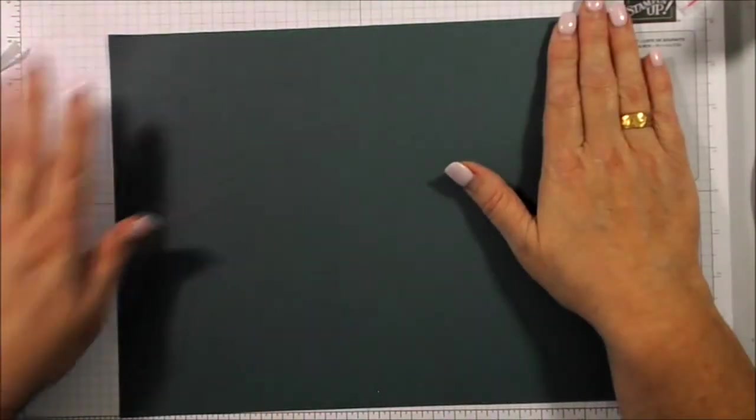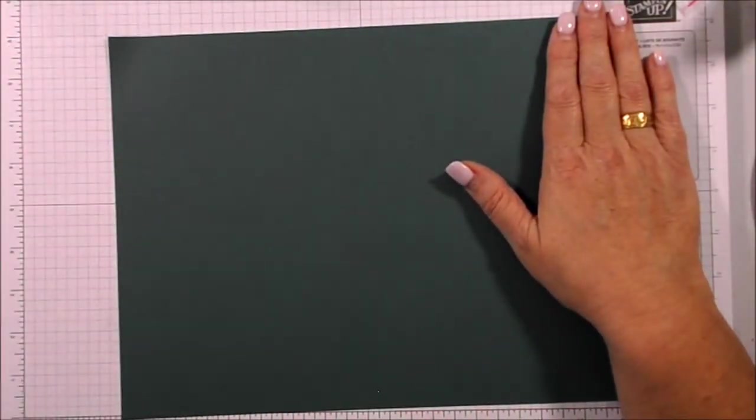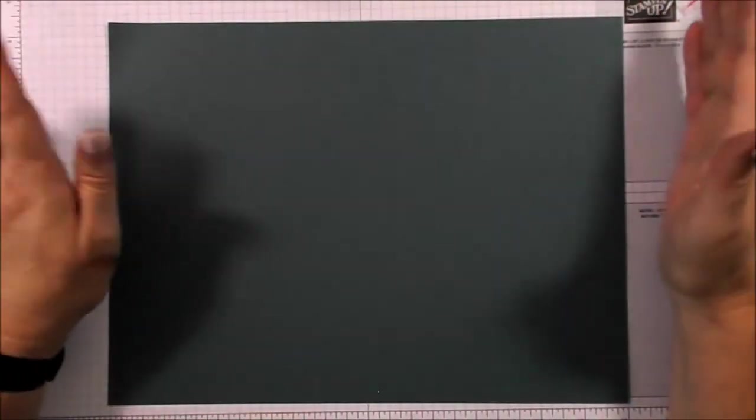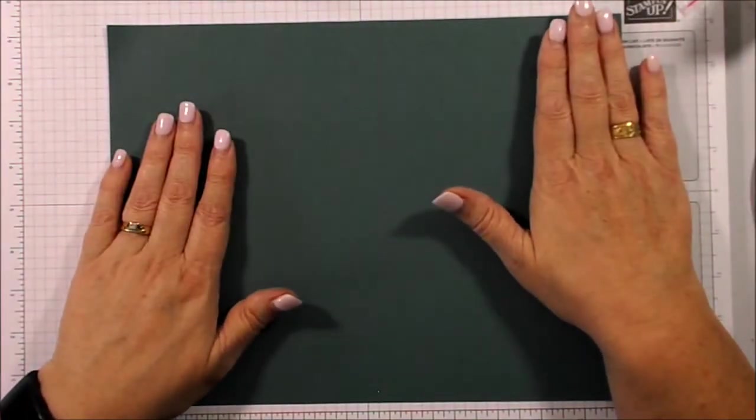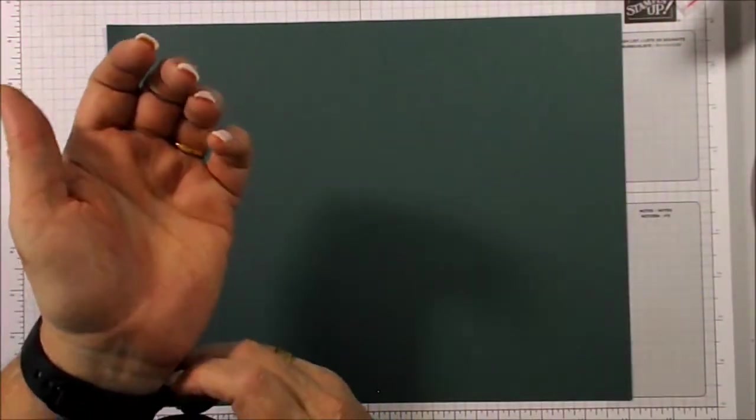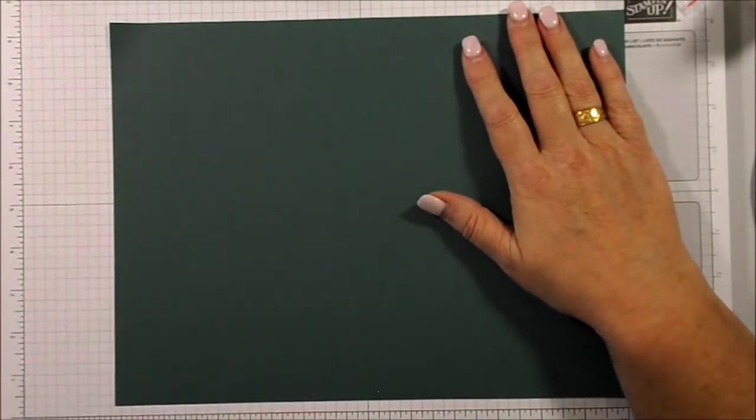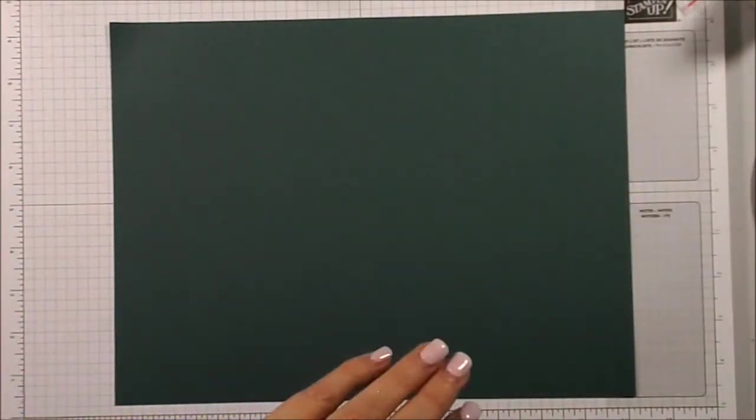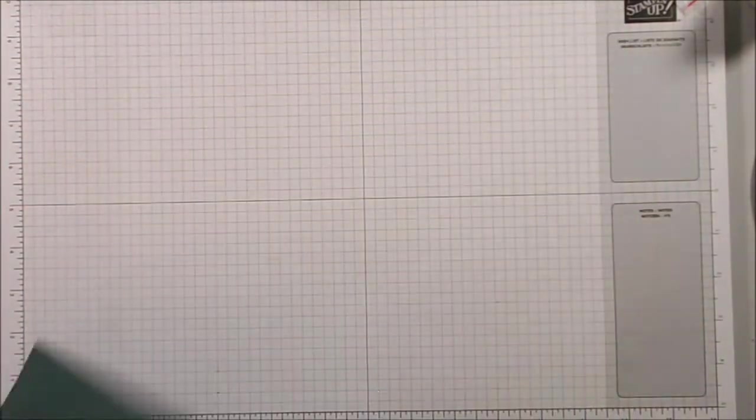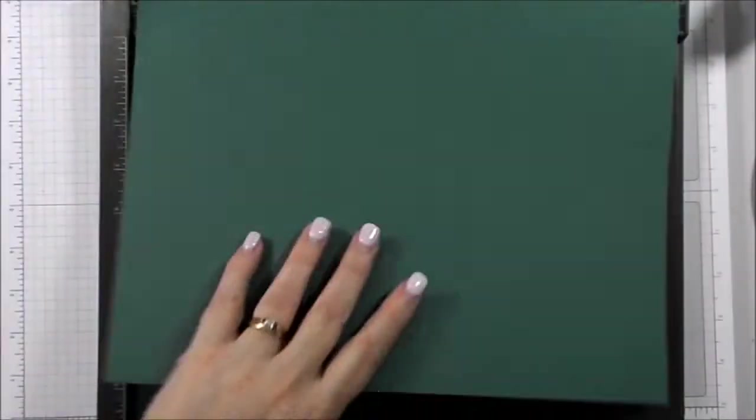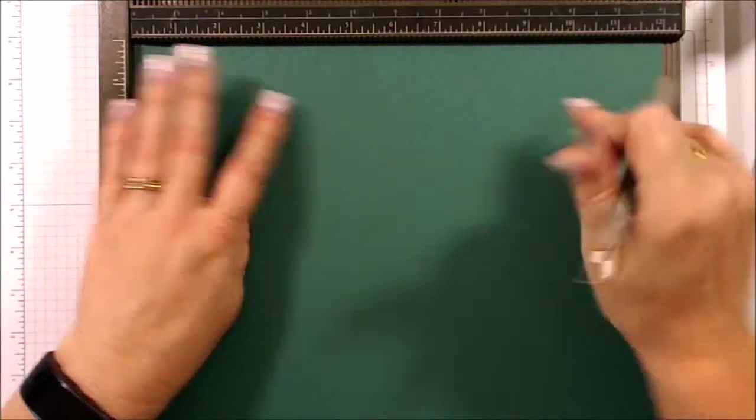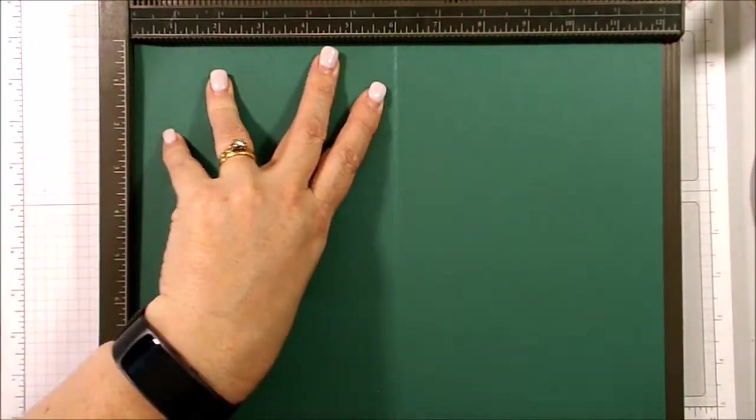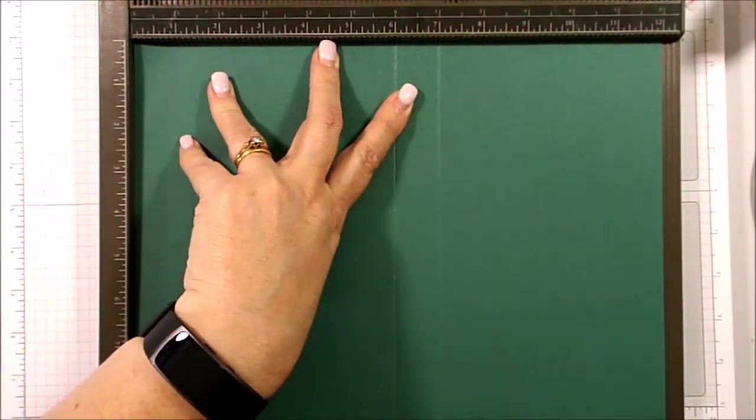So we've got our piece of cardstock. As I said, all the measurements can be found on my blog, so you don't need to write them down. This is actually a sheet of 12 inch by 9 inch cardstock that I've trimmed. Now I'm going to bring my scoreboard in. And what you need to do, on the 12 inch side, you score it at 6 inches and at 7 inches.